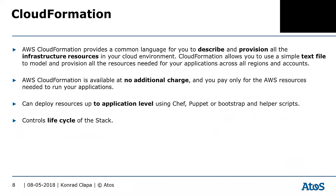AWS CloudFormation provides a common language for you to describe and provision infrastructure resources. It uses a text file to provision all the resources across different regions and accounts. The service itself has no additional charge; however, all the resources you provision, you pay for. Even if you do a rollback, CloudFormation will roll back but it will still charge you for the services.